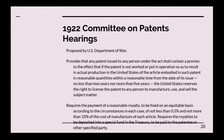The U.S. Department of War proposed a compulsory licensing statute that would have provided a provision within each patent — similar to the Bayh-Dole Act requirement stating if there's federal funding. The provision would state that if the patent is not put into operation so as to result in actual production in the United States within a reasonable time, defined as no less than two years nor more than five years, then the U.S. would reserve the right to license the patent to any person to manufacture, use, and sell the subject matter. It would require payment of a reasonable royalty, defined as not less than 0.5% nor more than 10% of the manufacture cost of each article.